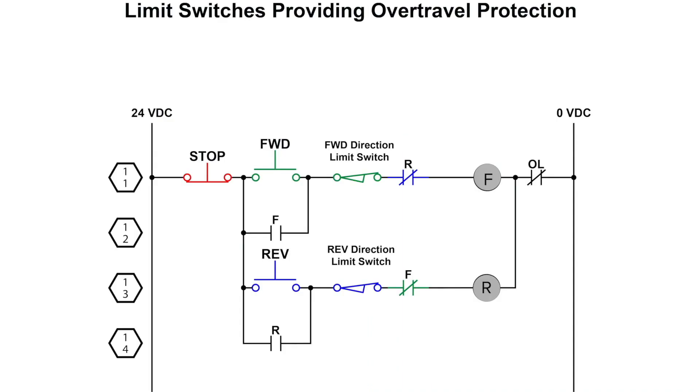The circuit shows how the limit switch will operate. The push button starts the motor as long as the limit switch is not tripped or actuated. The motor will turn off when the limit switch has been actuated or the stop button is pressed.